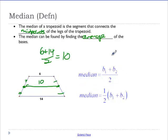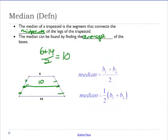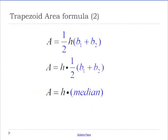If we already know the average of the bases, well, now we know the average of the bases, we multiply by the height. So, if you have the median, you can actually just multiply the median by the height to get the area of a trapezoid.